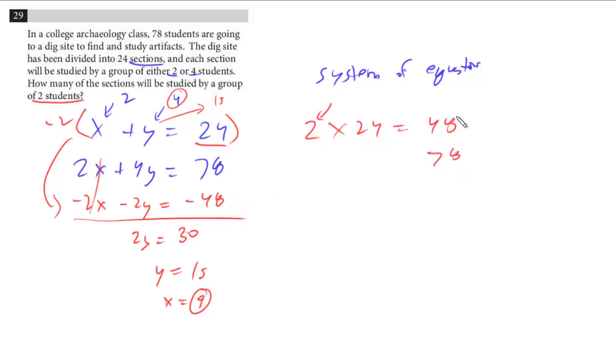So we have to make up the difference between 48 and 78, which is 30. What's the difference between the minimum two and the maximum four? Well, that's two. We've got to make up intervals of two. So you divide that difference by the interval, and you get y equals 15, just like we had here.